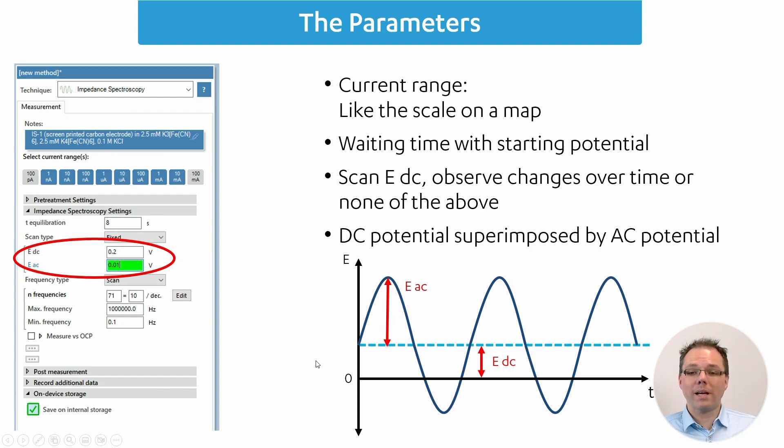The EDC basically tells you how far away that sine wave is from your zero point, which is usually the reference electrode. And then the EAC lets the potential oscillate around the EDC. The higher the EAC, the higher is the amplitude of your sine wave potential.